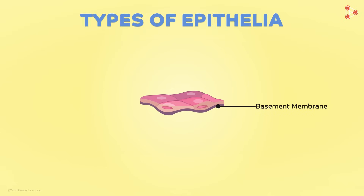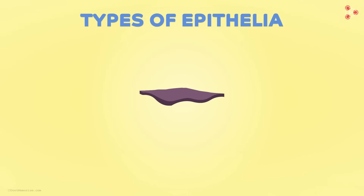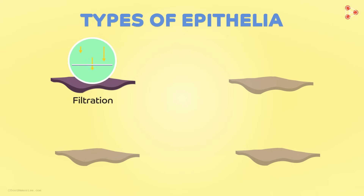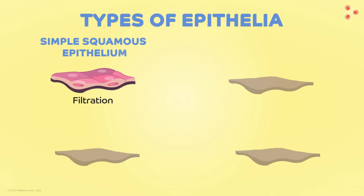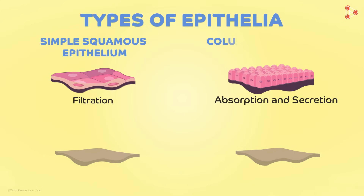Getting back to the types of epithelia, let's take a simple example. Imagine this to be a basement membrane. Now depending upon the functions, let's classify them. The first function is filtration — for this, we need a very flat surface. So this type of epithelium is referred to as simple squamous epithelium. The next function is absorption and secretion — for this, we need a larger surface area, which is why we have tall pillar-like cells on the basement membrane making up the columnar epithelium.